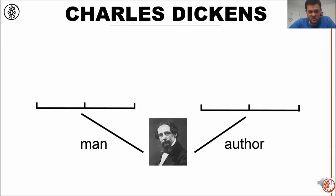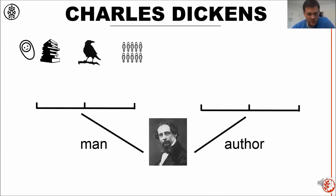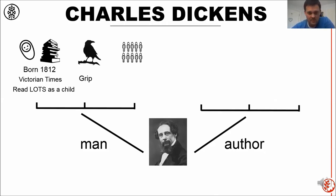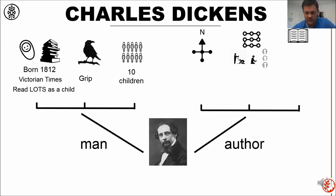Can you get that information from your long-term memory back into your working memory? So we know that he was born in 1812, lived in Victorian times, and read loads as a child. He had a pet raven called Grip, and he had 10 children, and he gave them peculiar nicknames. What do we know about him as an author? He wrote and slept facing north. His stories had themes — poverty was a theme, rich and poor was a theme — and he had some fantastic characters in his stories.